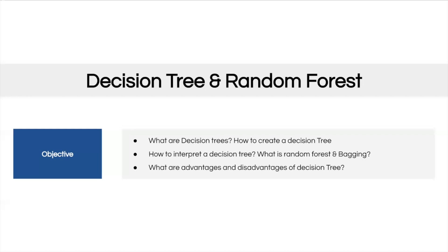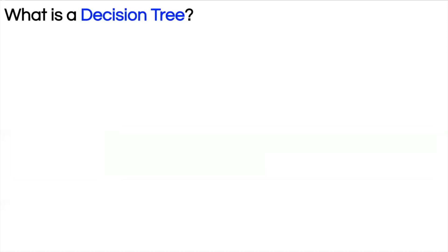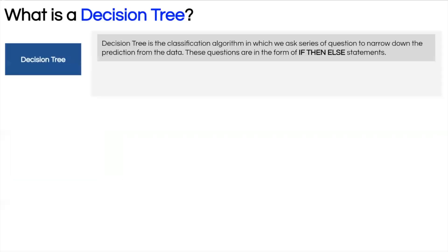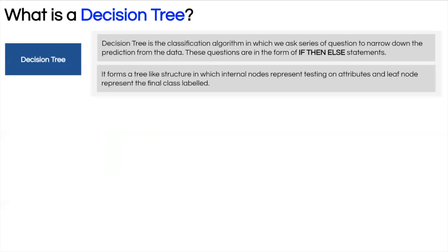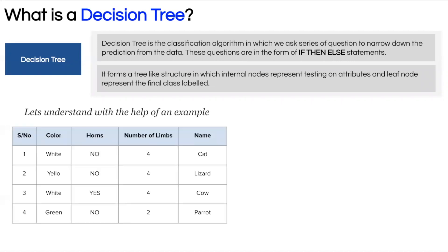So what is a decision tree? A decision tree is an algorithm to solve classification problems in which we ask a series of questions to get the final prediction. It is called a tree because as we ask questions, its structure becomes like a tree, where the leaf node tells you the classification result. Let's understand this with an example.